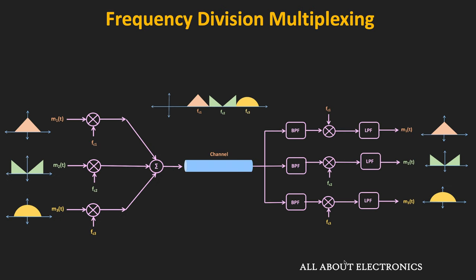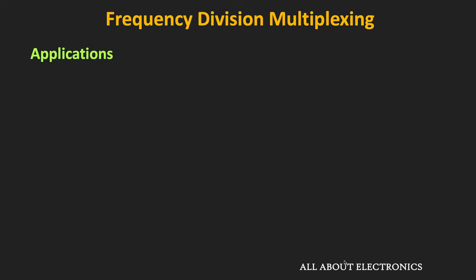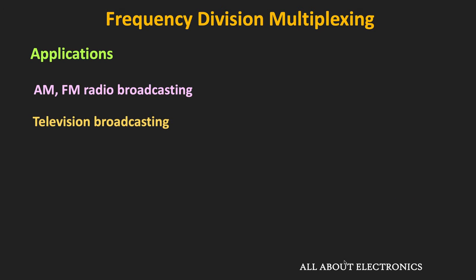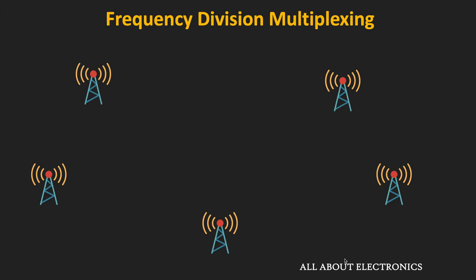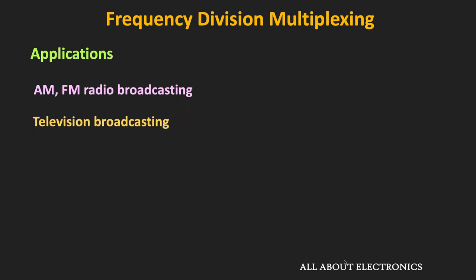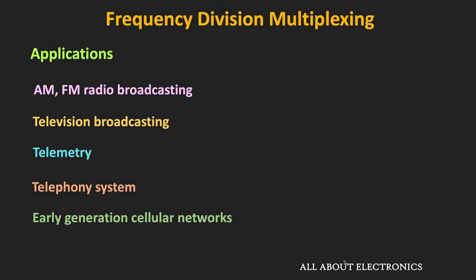Here is the complete block diagram of the frequency division multiplexing scheme. This FDM technique is used in many applications, like radio and television broadcasting. In radio and TV broadcasting, there is no need to physically multiplex or demultiplex the signals, because as long as stations agree to send the message signal at different carrier frequencies, multiplexing is already achieved in the air. FDM is also used in telemetry as well as in telephony systems, and early generation cellular networks were also using the FDM technique.